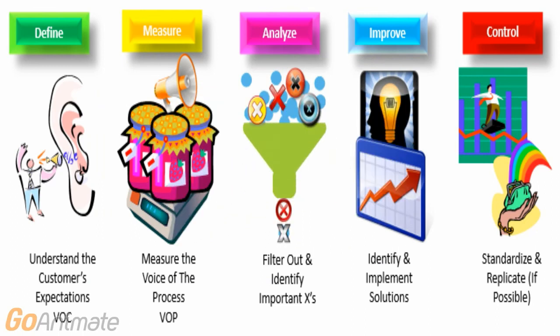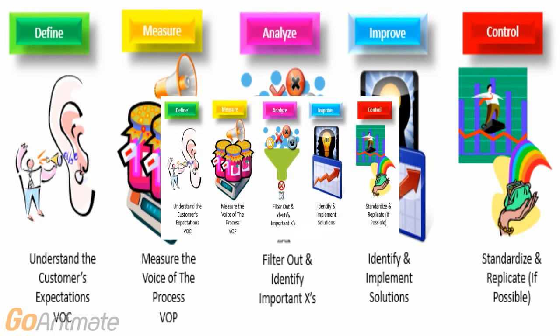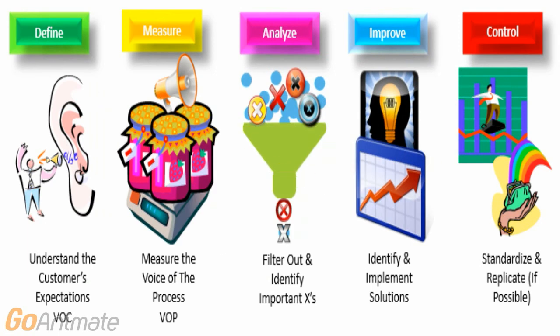In the Analyze phase, we identify the difference between the VOP and the VOC and identify the important inputs that have an impact on this difference. In the Improve phase, we identify and implement solutions. In the Control phase, we standardize and replicate the significant wins of this project to other lines and areas.